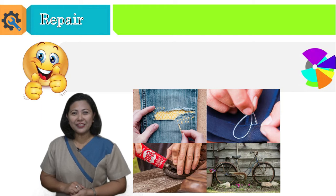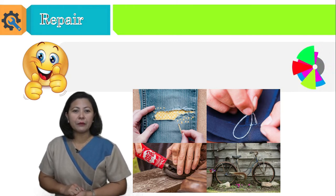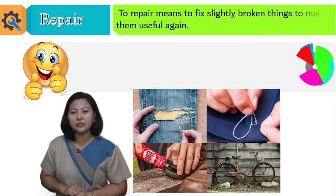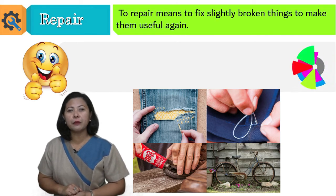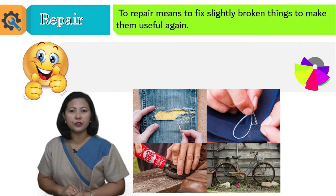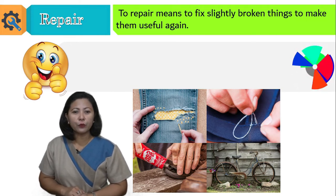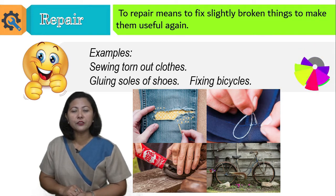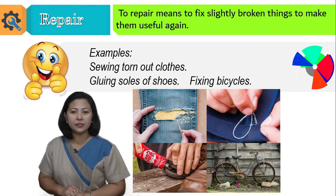Now let's proceed to the fourth component of waste management: repair. To repair means to fix slightly broken things to make them useful again. Examples include sewing torn-out clothes, gluing soles of shoes, and fixing bicycles.